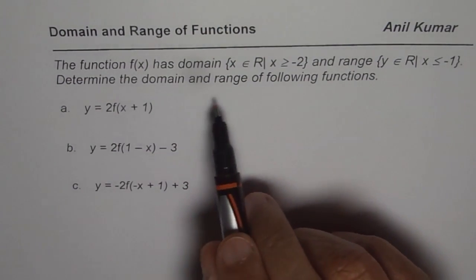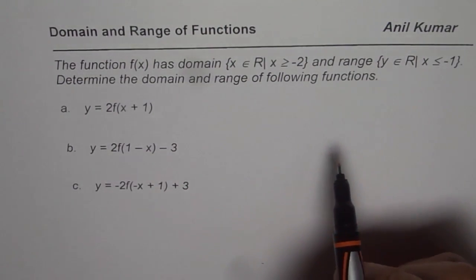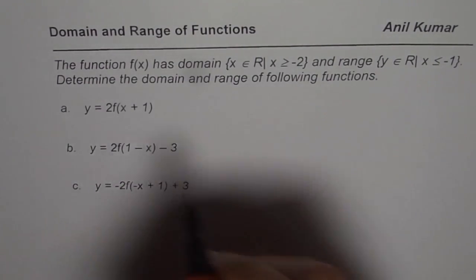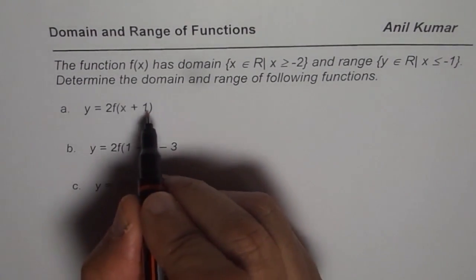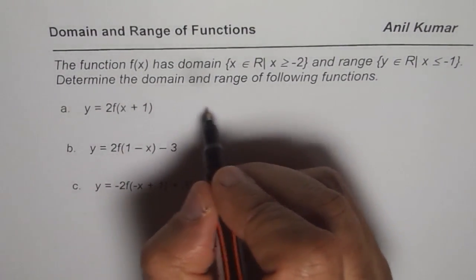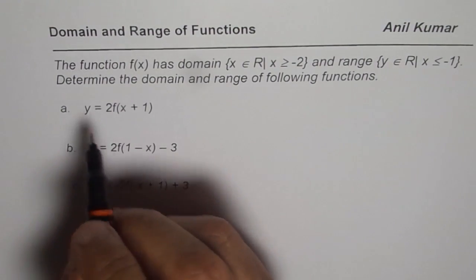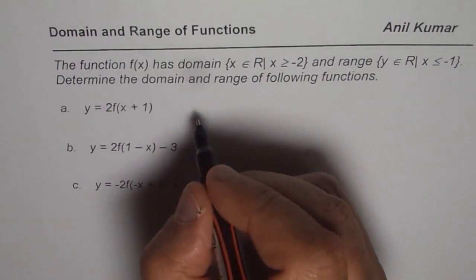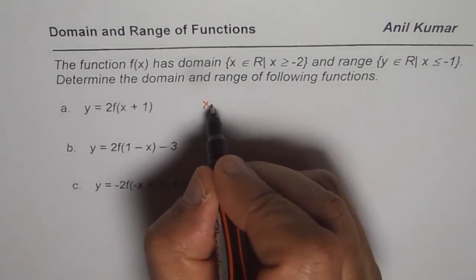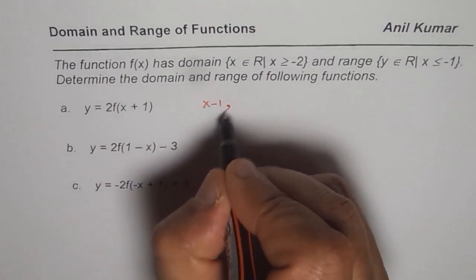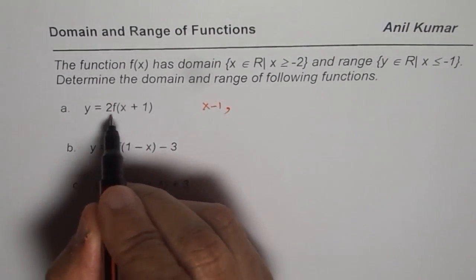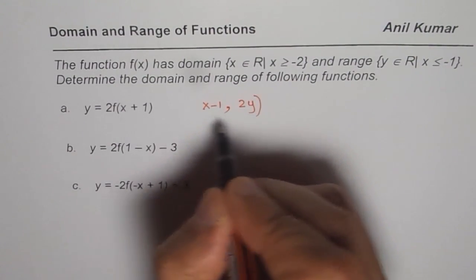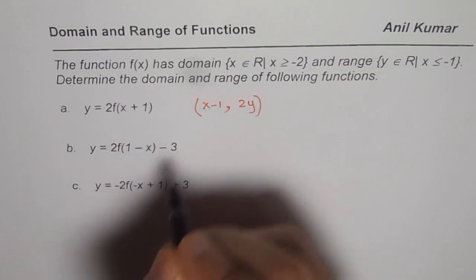Determine domain and range for the following functions. Before writing domain and range, let us understand the transformation. The transformation here is that the x value should be subtracted by 1, so we have x minus 1. And the y value will get multiplied by 2. So that is the kind of transformation.